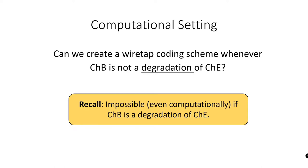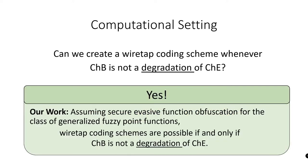We now return to our original question, but this time in the computational setting. We ask, can we create a wiretap coding scheme whenever channel B is not a degradation of channel E? And recall that our simple impossibility holds even in the computational setting. Well, in our work, we show that yes! Assuming a form of secure evasive function obfuscation, we can build wiretap coding schemes if and only if channel B is not a degradation of channel E. This greatly extends the feasibility region compared to the information-theoretic setting, and in fact, is the best possible feasibility region that we could hope for.